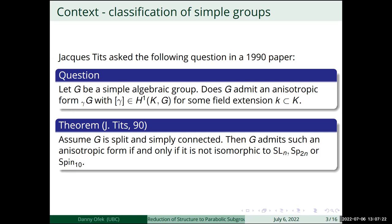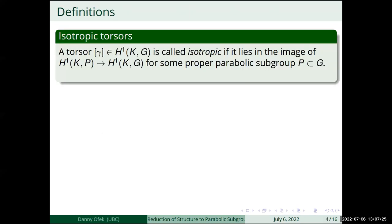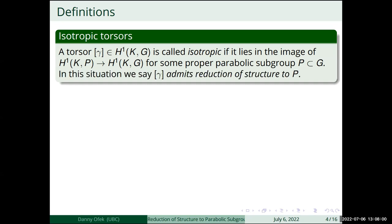Let me give you the main definition for this talk, which is not standard. A G-torsor gamma is called isotropic if it lies in the image of the induced map on cohomology from the inclusion of some proper parabolic subgroup P of G. So I'm asking if gamma is induced from some P-torsor, where P is some proper parabolic subgroup. In such a situation, we say that gamma admits reduction of structure to P.